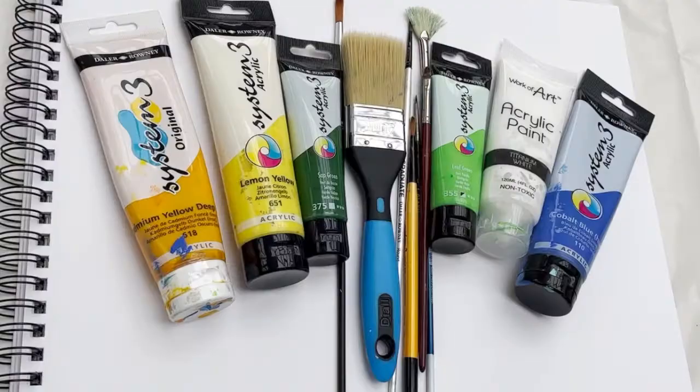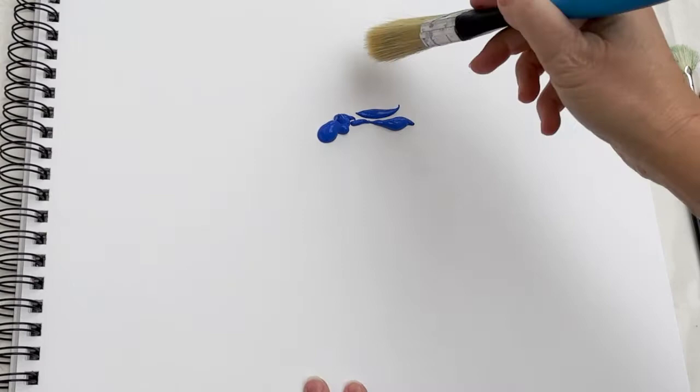How to paint daisies. I'm going to be using acrylic paints: cadmium yellow, lemon yellow, sap green, leaf green, titanium white, and cobalt blue. I'm using mixed media paper, a wide brush, and a medium round brush.